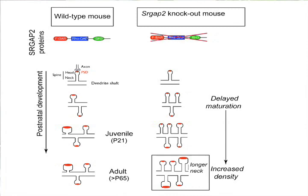In agreement with our previous results, expression of human-specific SRGAP2C in mouse cortical neurons in vivo mimics ancestral SRGAP2 deficiency, inducing neoteny during spine maturation, which means that spines remain immature for a longer time. We also found that adult neurons expressing human-specific SRGAP2C exhibit a higher density of longer spines. This is very important because these are differences that were shown by other teams to be characteristics of human neurons. Together, our results show a crucial role for SRGAP2 during spine maturation in vivo, and suggest that the human-specific duplication of SRGAP2 has contributed to the emergence of human-specific features during brain evolution.